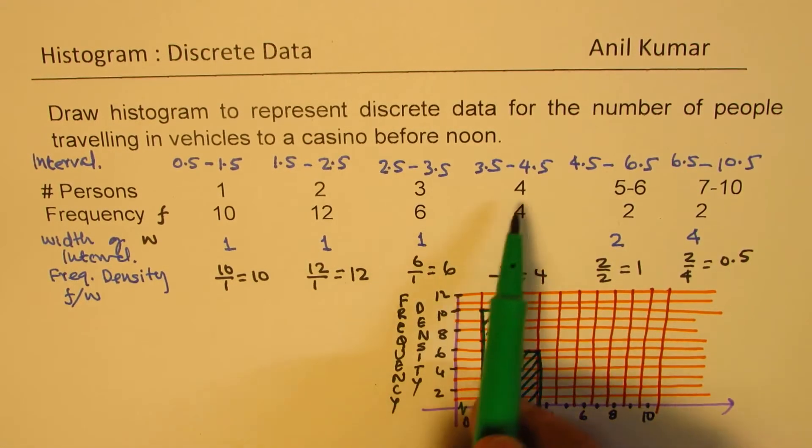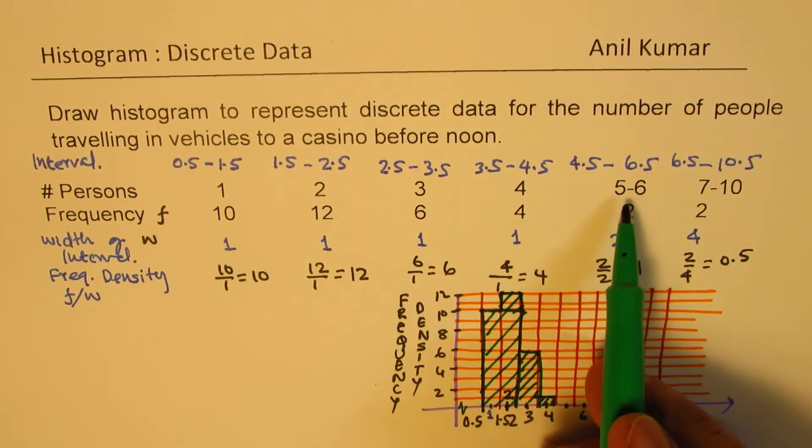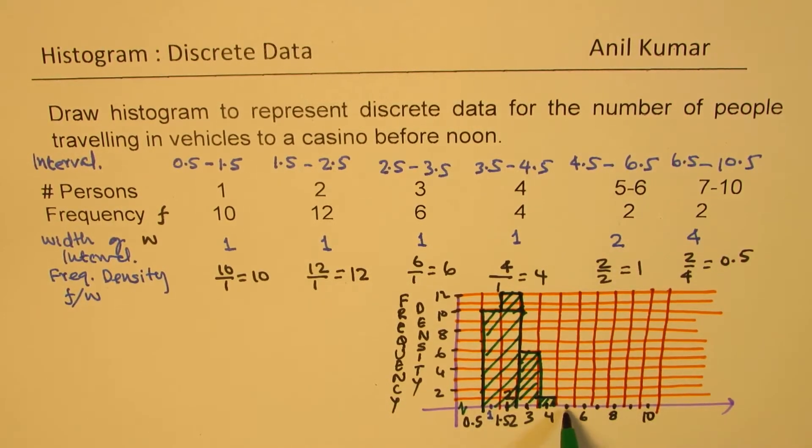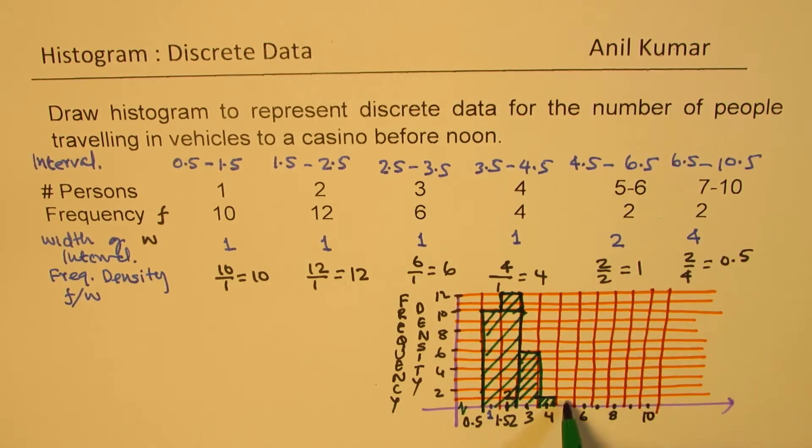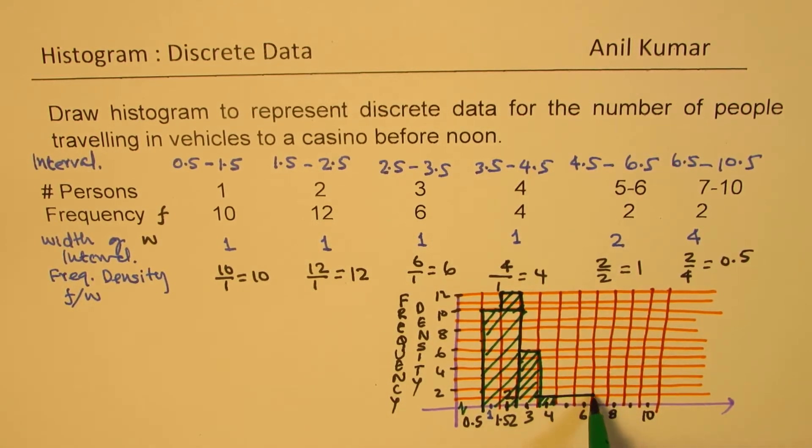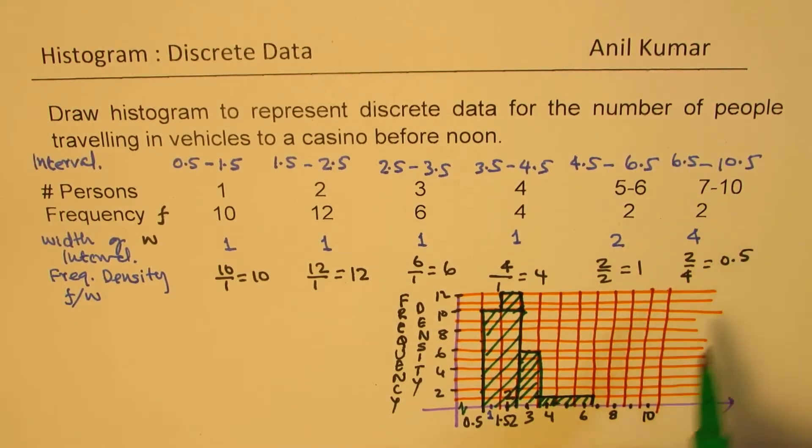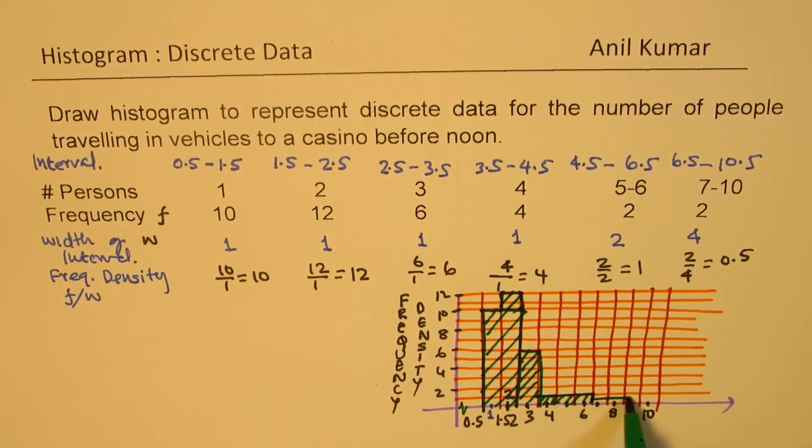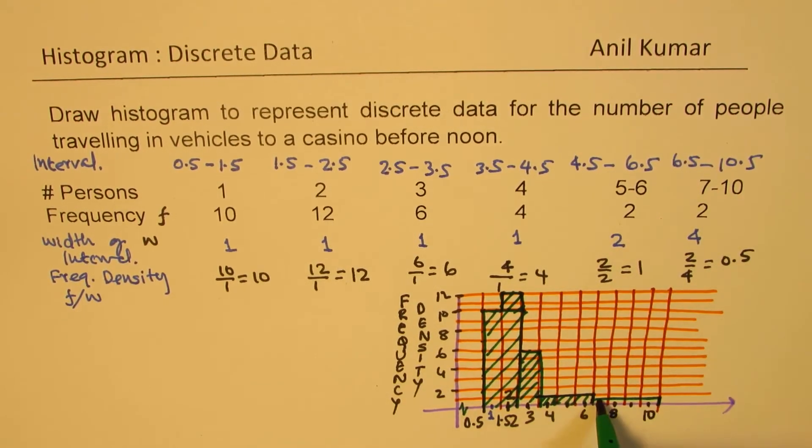And then, for 4, it is 1. For 5 to 6, that is from 5 to 6, it is 1. And then, from 7 to 10, it is 0.5. Do you see this part?